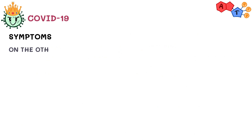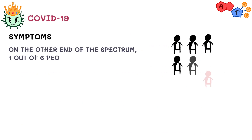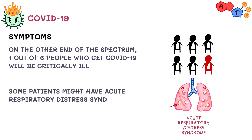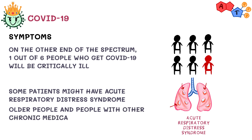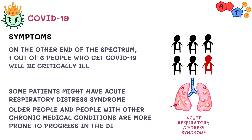On the other end of the spectrum, 1 out of 6 people who get COVID-19 will be critically ill. Some patients might end up with acute respiratory distress syndrome — respiratory failure due to lung inflammation and fluid buildup in the alveoli. Older people and those with chronic medical conditions such as diabetes, hypertension, heart disease, or lung disease are more prone to disease progression and worsening.